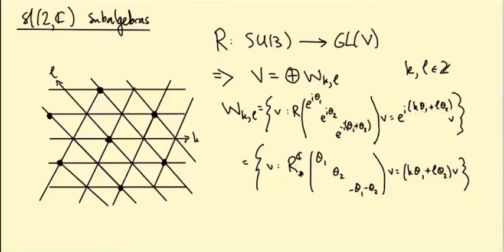Another way of thinking about this: if we pass to the Lie algebra level, we get a Lie algebra representation on the same vector space V. R of a matrix, which is e to the something, becomes e to the R* of another matrix. So we can also think of these as simultaneous eigenvectors of R* applied to (θ1, θ2, −θ1−θ2), with eigenvalue Kθ1 + Lθ2. Note that this matrix is not in su(3) — it's in sl(3,ℂ), because it's not anti-Hermitian, so we had to complexify the representation to define this.